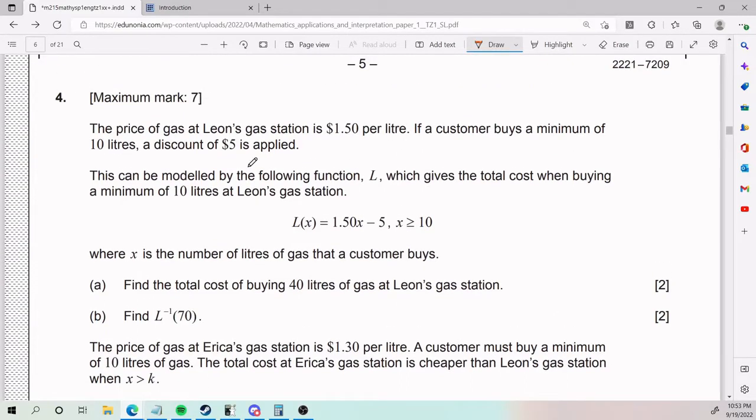Number four. The price of gas at Leon's gas station is $1.50 per liter. If a customer buys a minimum of 10 liters, a discount of $5 is applied. This can be modeled by the function which gives the total cost when buying a minimum of 10 liters at Leon's gas station. That's why there's this restriction here. X has to be greater than or equal to 10 because that is the 10 liters that people are buying. X is the number of liters of gas that a customer buys.